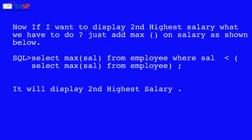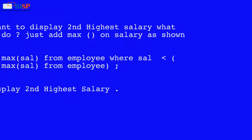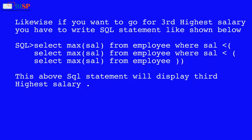To display the second highest salary, add a MAX function on salary: SELECT MAX(salary) FROM employee WHERE salary < (SELECT MAX(salary) FROM employee). For the third highest salary, nest one more level: SELECT MAX(salary) FROM employee WHERE salary < (SELECT MAX(salary) FROM employee WHERE salary < (SELECT MAX(salary) FROM employee)).